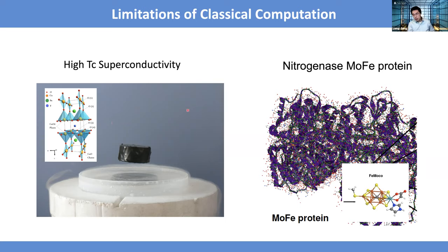The other case is related to nitrogen fixation. Here is a particular protein, and inside the protein there is a particular structure. If you look at it, it's not that big — just a few dozen atoms. However, we still don't know how this thing works to play the role of nitrogen fixation, which is a very important process for plants to convert nitrogen molecules into something biologically useful.